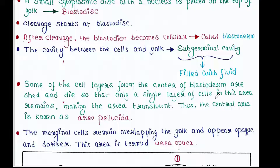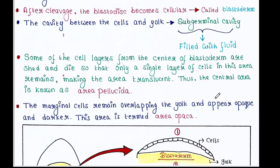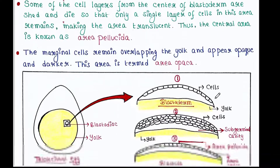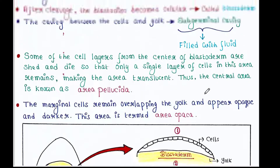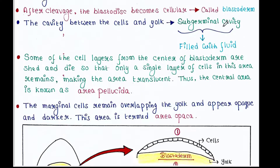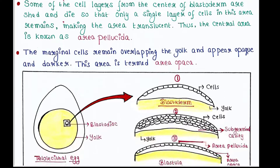The cavity between the cells and the yolk is called the sub-germinal cavity. This sub-germinal cavity is placed between the yolk and the cells, and it is filled with fluid.